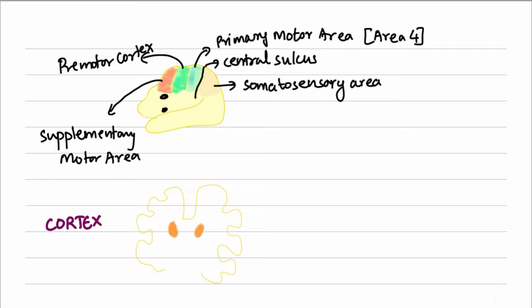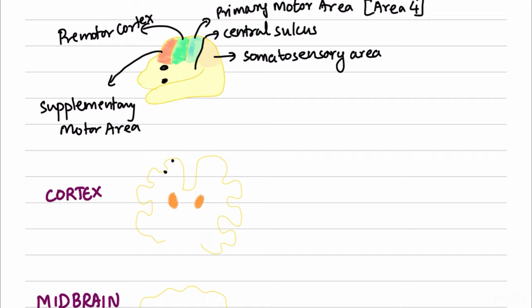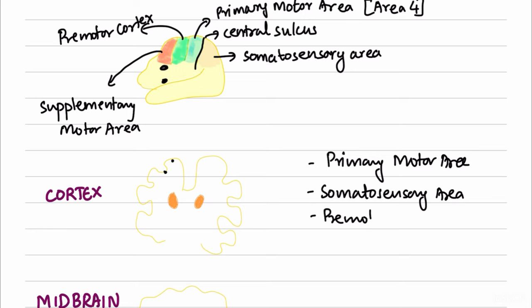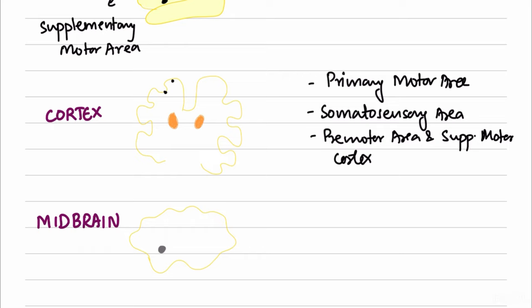The pyramidal tract fibers arise from three areas: 40% from the somatosensory area, 30% from the primary motor cortex, and the remaining 30% from the pre-motor and supplementary motor cortex. The large contribution from the somatosensory area highlights the coordination between sensory and motor cortex — motor activities are performed in response to sensory stimuli.